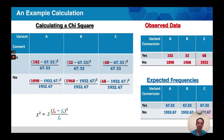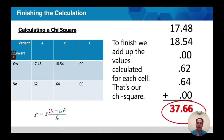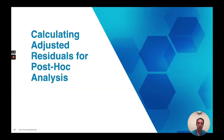Once we set up and perform the calculations, the final step is to add everything up. We get 37.66. We compare this to our critical value on a table, and that tells us whether or not we have a significant result.